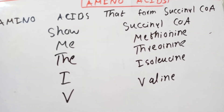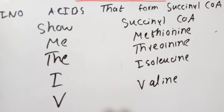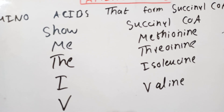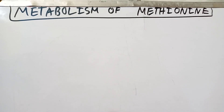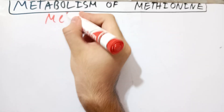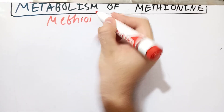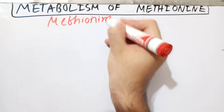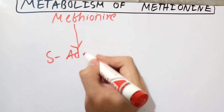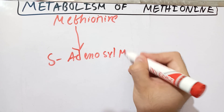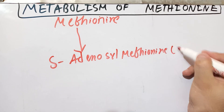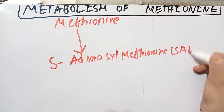Let's talk about methionine first, as it is the most important amino acid with respect to the formation of succinyl coenzyme A. In the metabolism of methionine, it is first converted into a compound called S-adenosyl methionine. As the name implies, adenosine is required for the formation of S-adenosyl methionine.